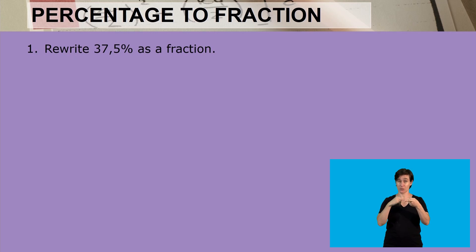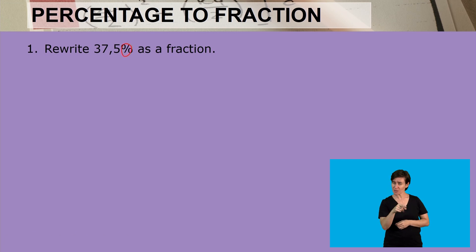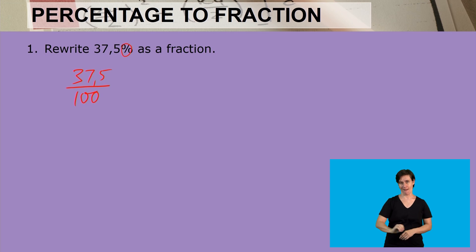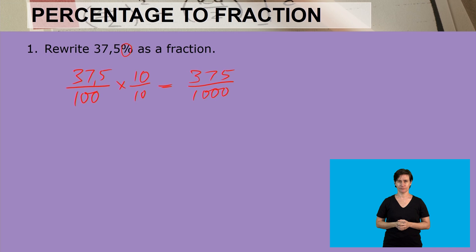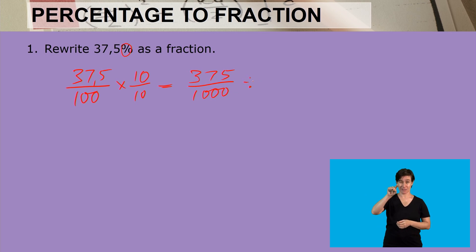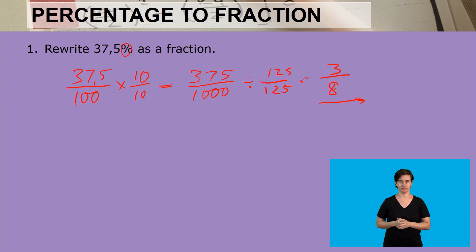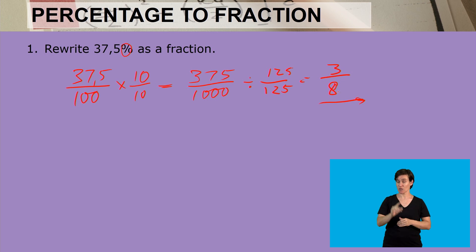Now we have to rewrite 37.5% as a fraction. The sign represents a denominator of a hundred, so it's 37.5 divided by a hundred. However, there is a comma, so we multiply by ten over ten to eliminate it. That gives us 375 divided by a thousand. Now let's write this in simplest form — we divide numerator and denominator by 125, and that gives us three eighths. So 37.5% can be represented as three-eighths in fraction form.